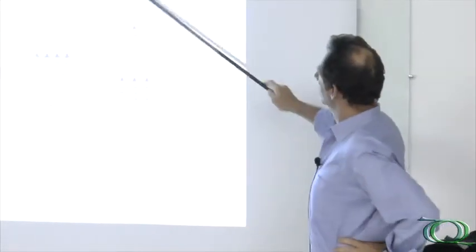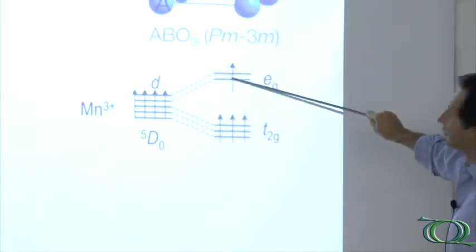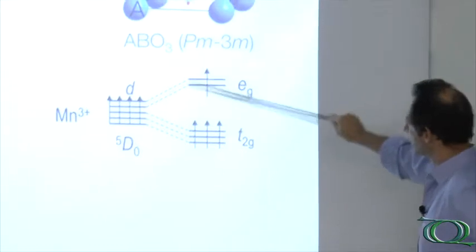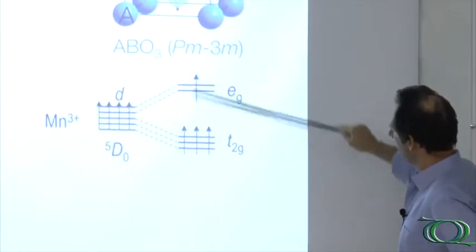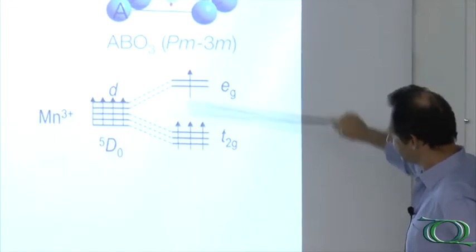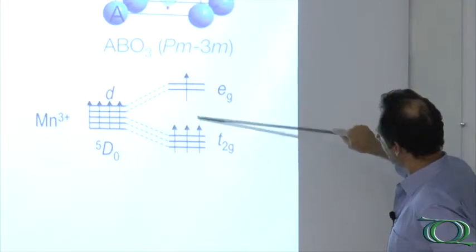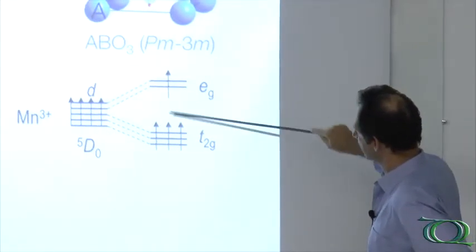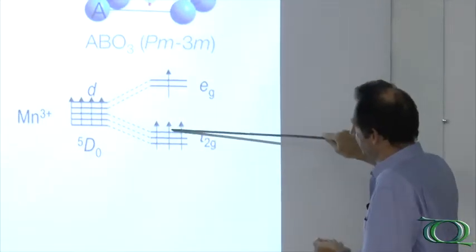And if you have one electron, for example the case of manganese 3+, in this EG doublet, then because of Hund rule, you have a high-spin configuration, and then you have this spin configuration. And then of course, this fourth electron must jump from this level to this one, right? So you have an electronic energy.